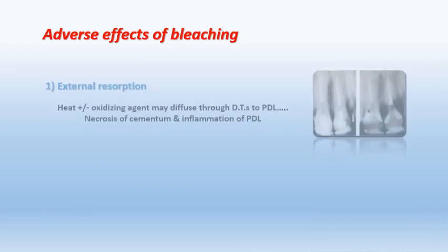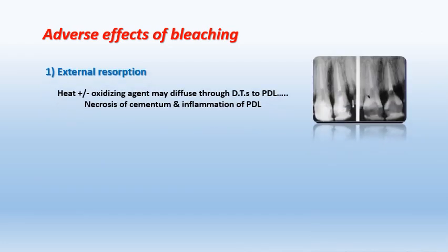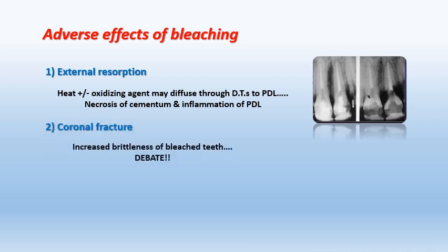The adverse effects of bleaching: the first is external cervical root resorption. This results from excessive heat, as in the thermocatalytic type of internal bleaching, and from oxidizing agents that diffuse through the dentinal tubules to the periodontal ligament. These materials are toxic and cause inflammation of the periodontal ligament and damage to the cementum, with subsequent external root resorption.